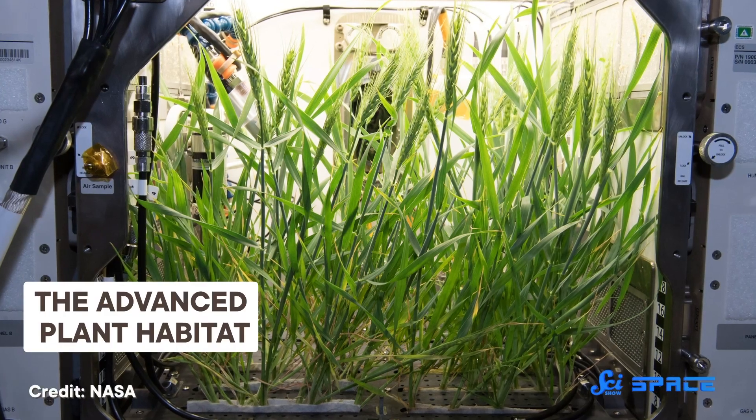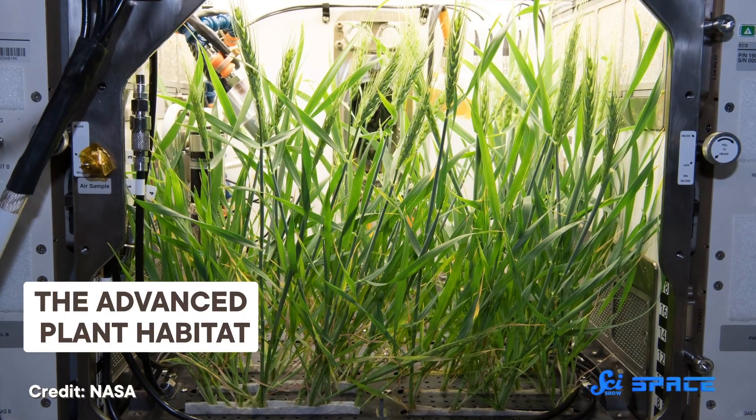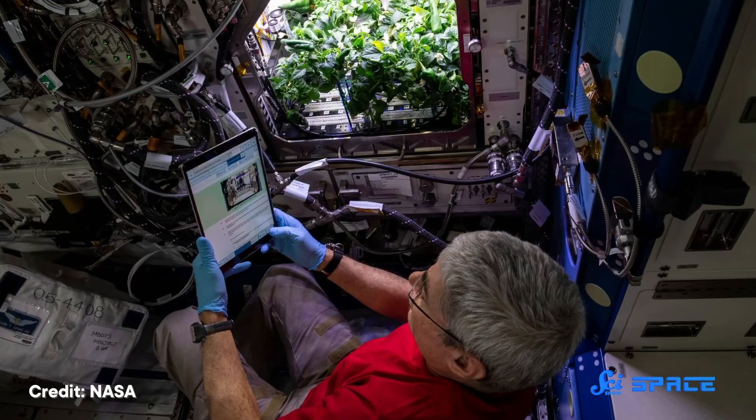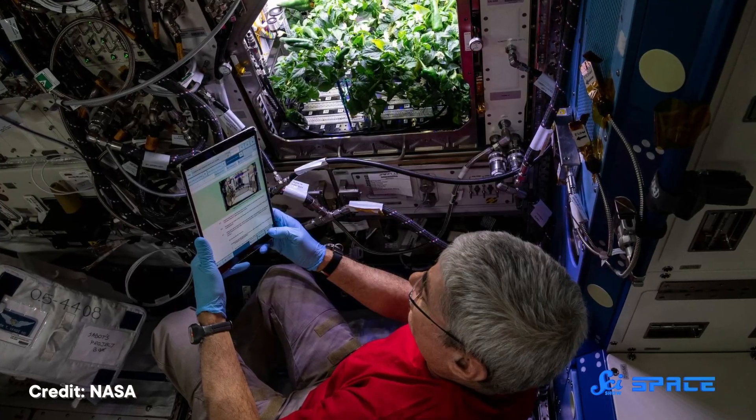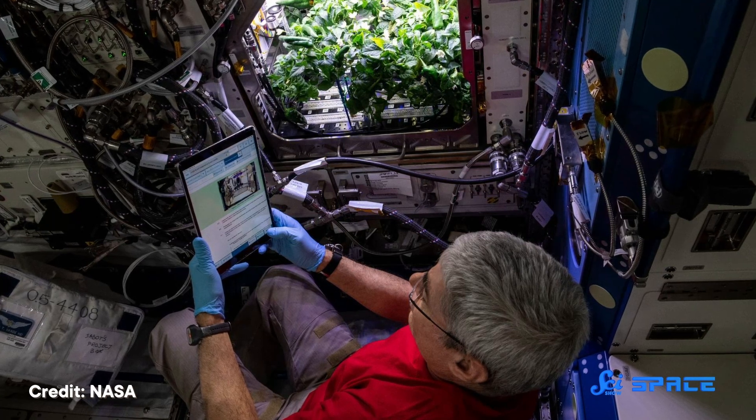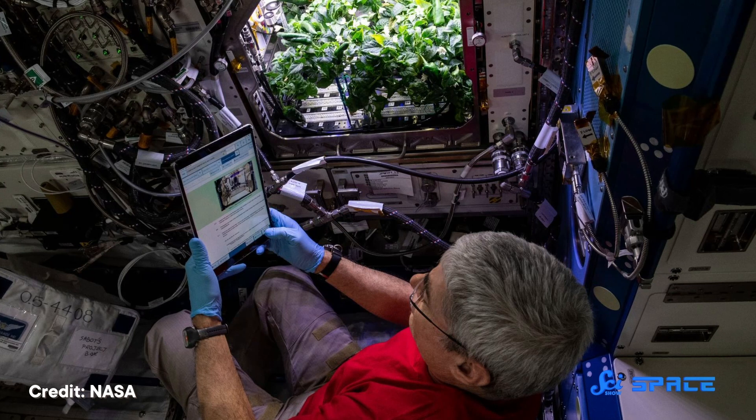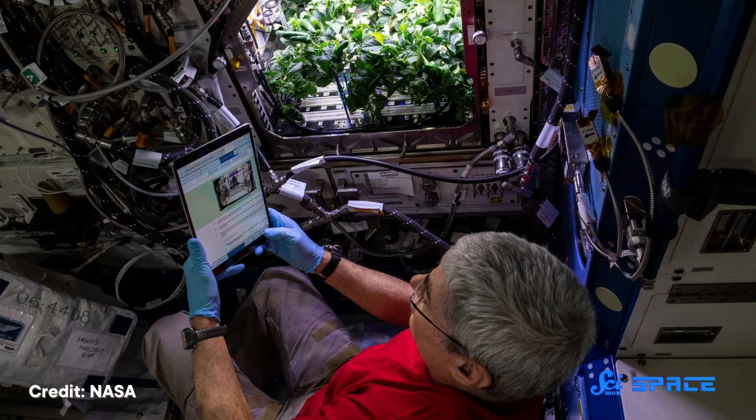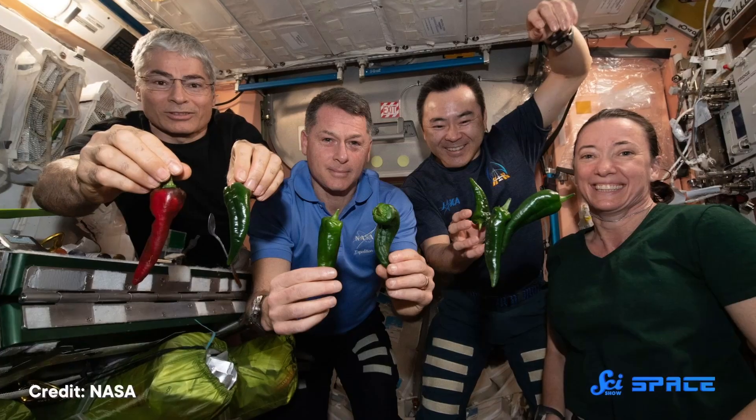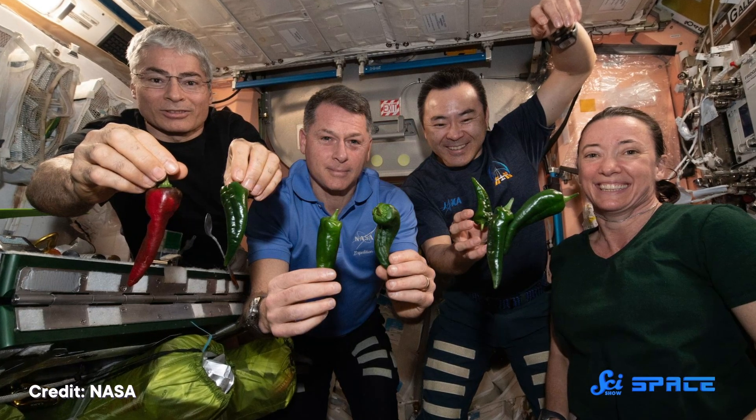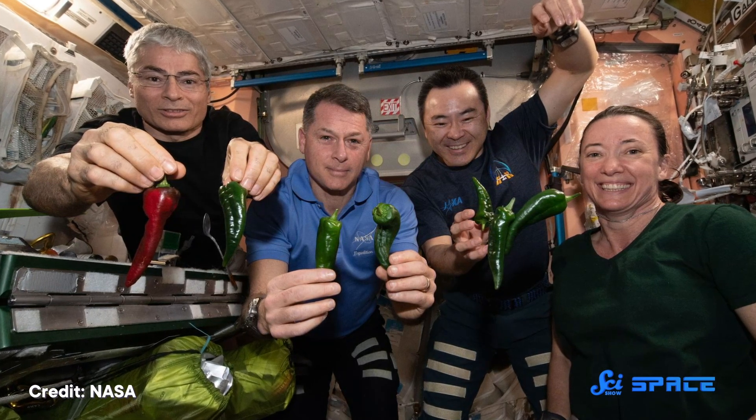NASA also has another fully automated version of Veggie on board, called the Advanced Plant Habitat. It uses sensors, cameras, lights, and water and gas reserves that can monitor and control watering, temperature, and oxygen and carbon dioxide levels inside its enclosed chamber automatically. Using the Advanced Plant Habitat, astronauts have been able to grow dwarf wheat and, in 2021, edible peppers.